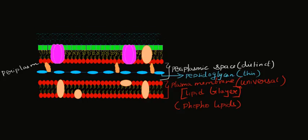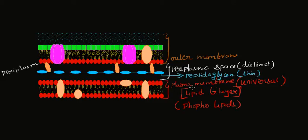What lies outside this periplasm? Outside the periplasm we have our most important structure called the outer membrane. One thing about the outer membrane is that the whole outer membrane can be called a lipid bilayer, just like the plasma membrane.